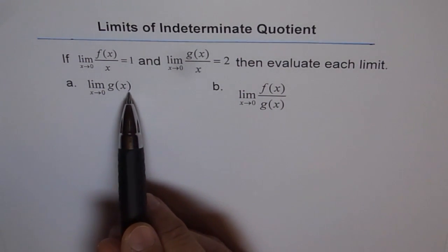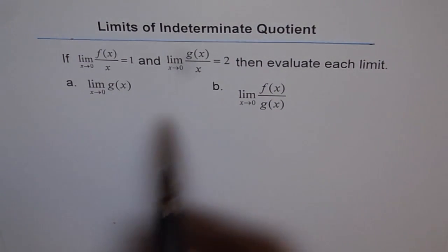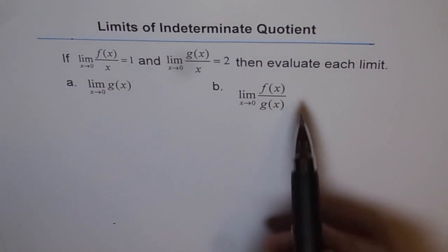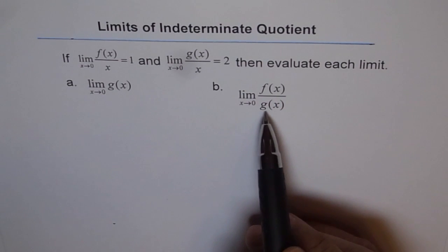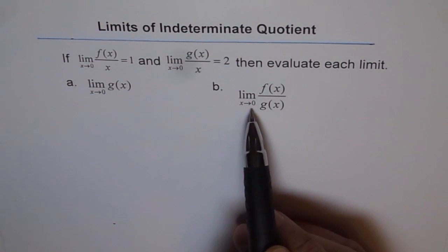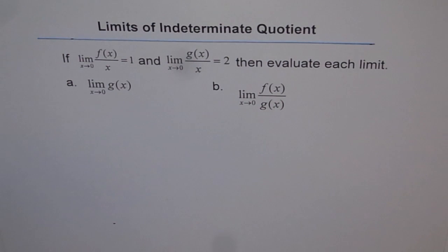A. Limit of g of x as x approaches 0 and B. Limit of f of x divided by g of x as x approaches 0. Think and answer the question. You can stop the video meanwhile and then look into my solution.